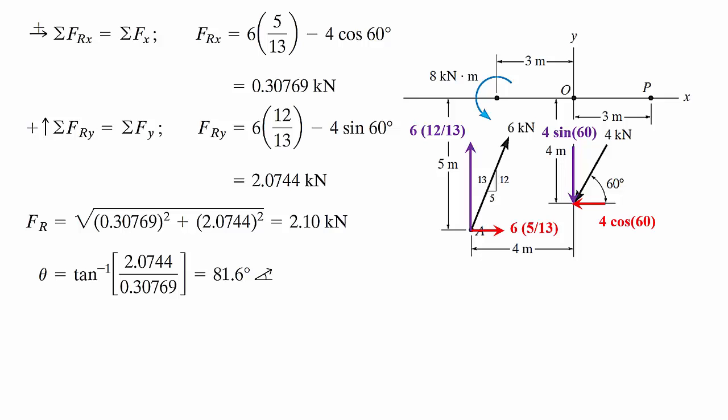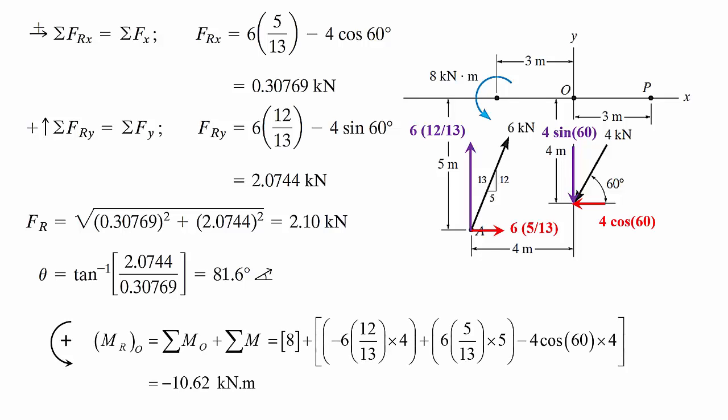Now if I apply the third equation, which is the summation of the moment, I will get sigma MO plus sigma M. How many concentrated moments I have? I have only one, which is the 8 kilonewton meter and it's counterclockwise, so it's positive. So that's 8 plus negative 6 times 12 over 13. That's the force multiplied by the perpendicular distance, which is 4 plus 6 times 5 over 13, which is the force multiplied by the perpendicular distance, which is 5 minus 4 cosine 60. That's the force multiplied by 4, which is the perpendicular distance. And I will have negative 10.62 kilonewtons meter. So it's negative. So the resultant moment is clockwise.